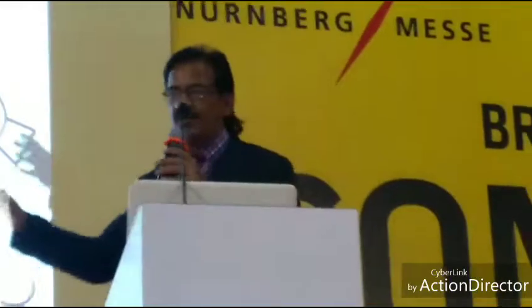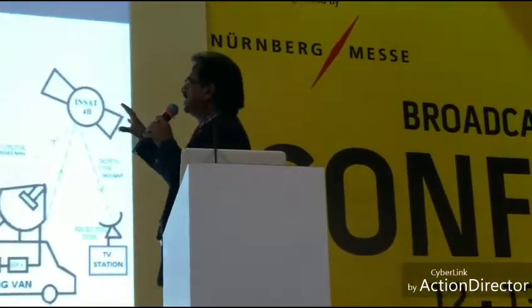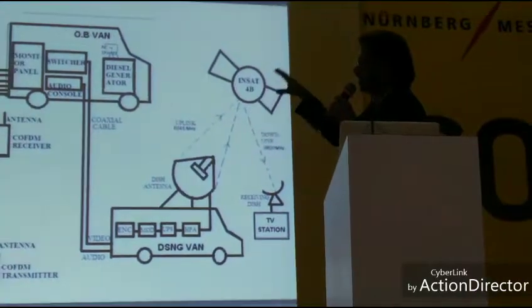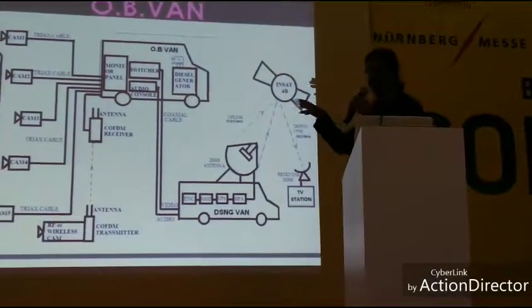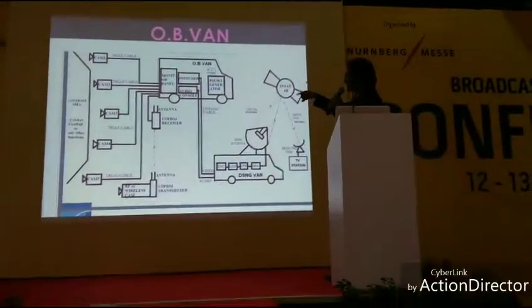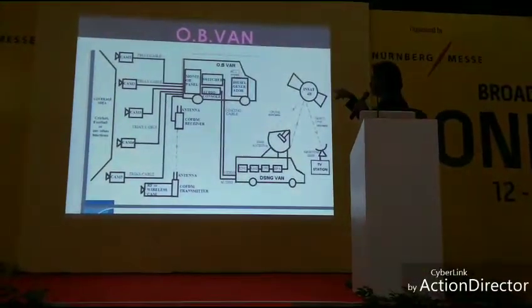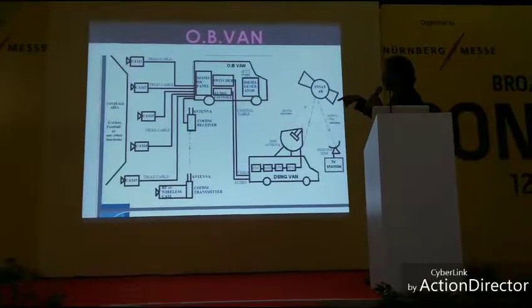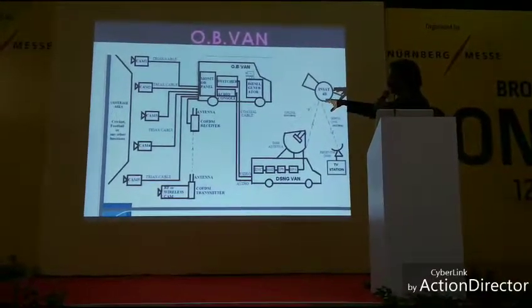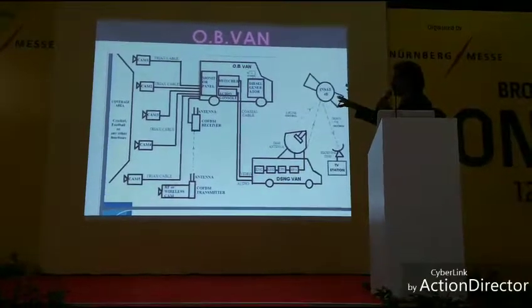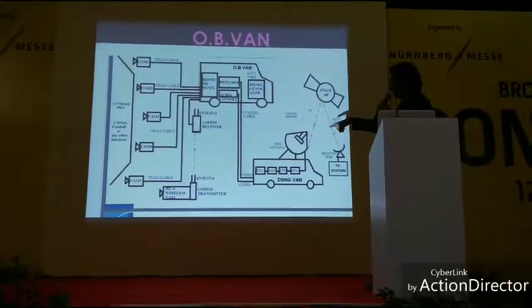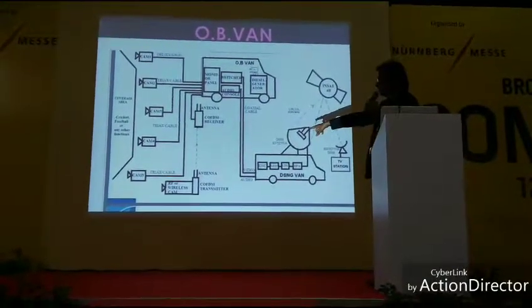This is a connectivity diagram of an OBVAN with different cameras. Suppose I have five cameras — these cameras are connected via cable to the inside of the OBVAN. There is also another antenna unit; suppose I want to transmit some audio and video wirelessly, so there is a wireless camera as well.